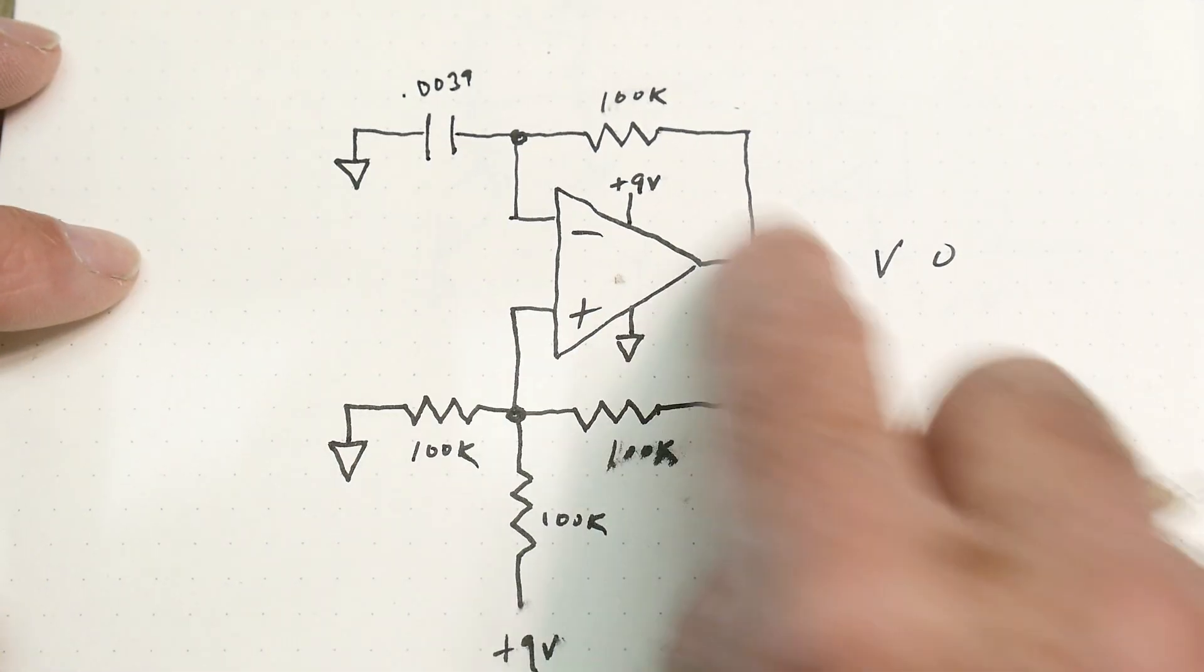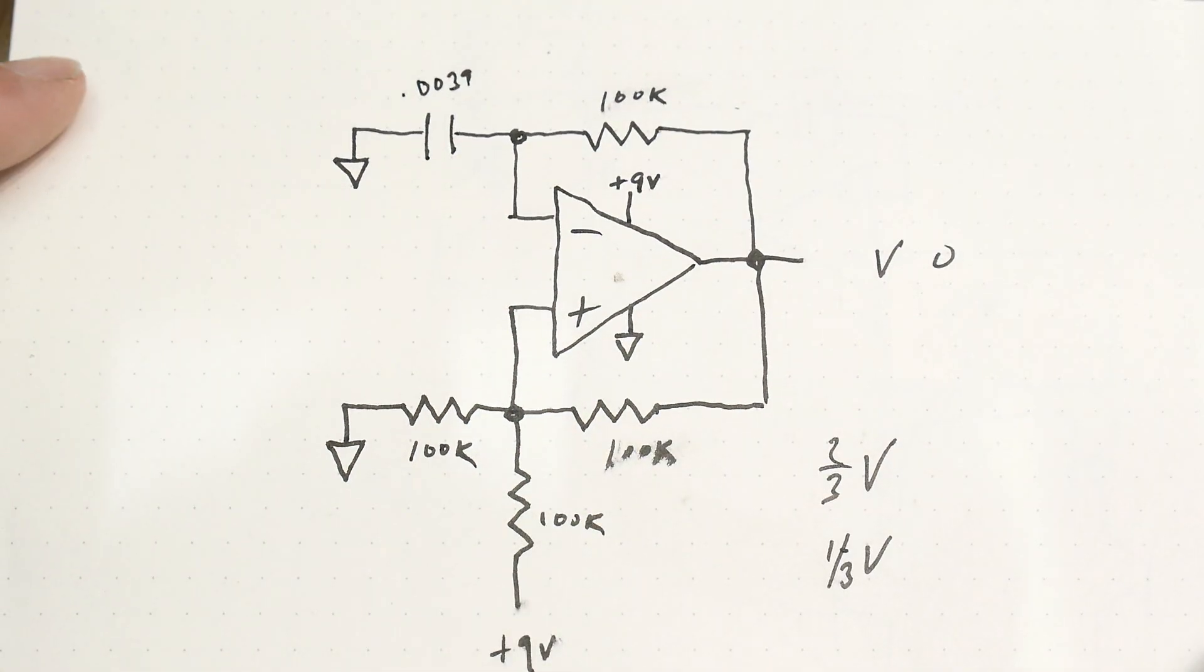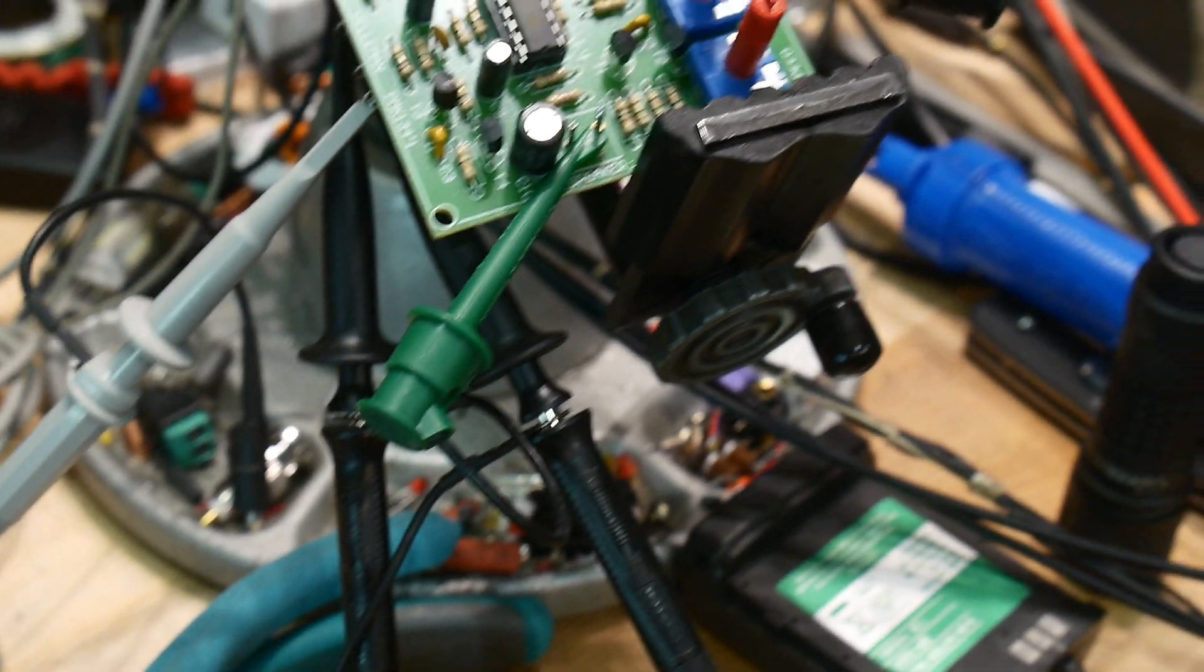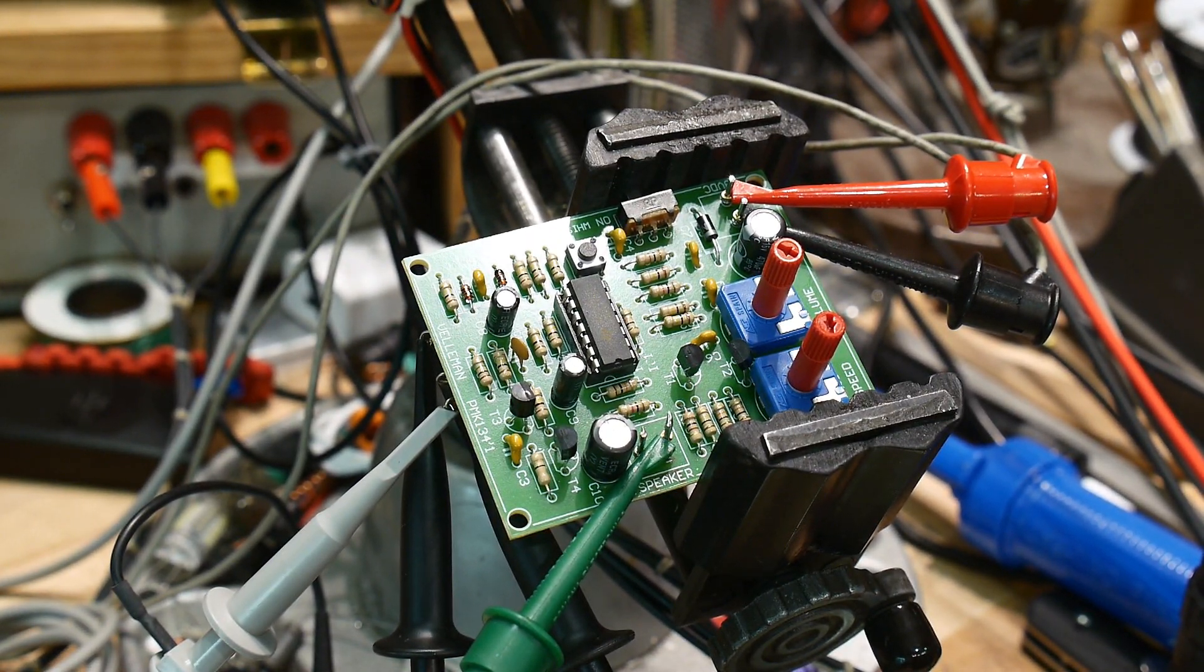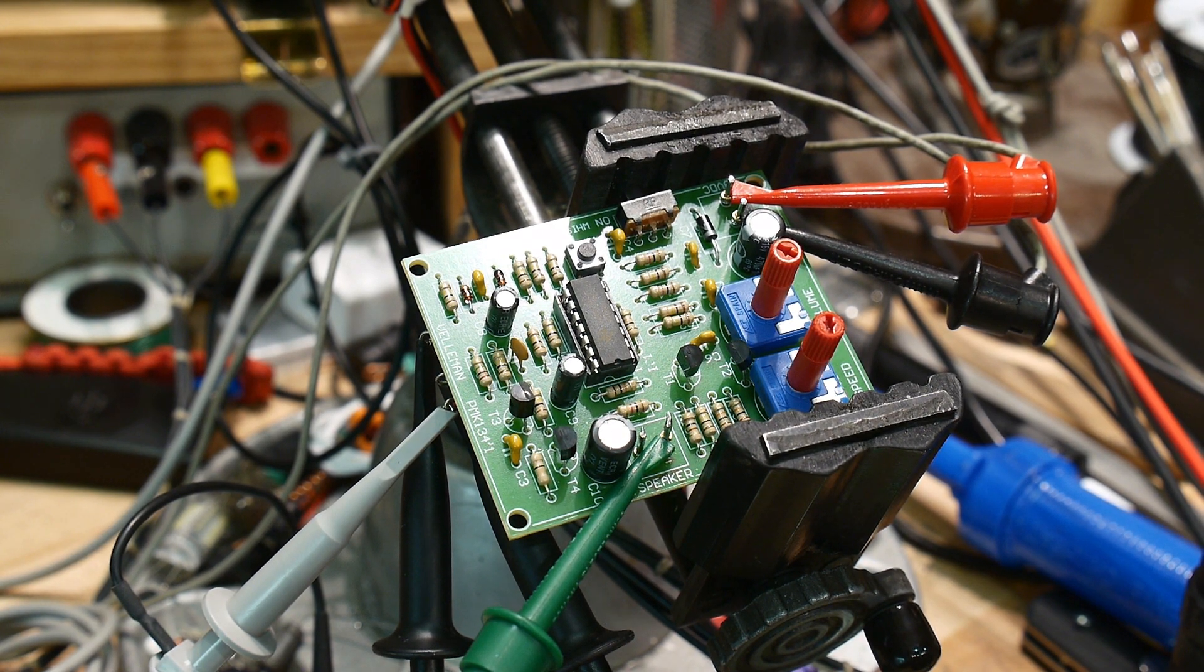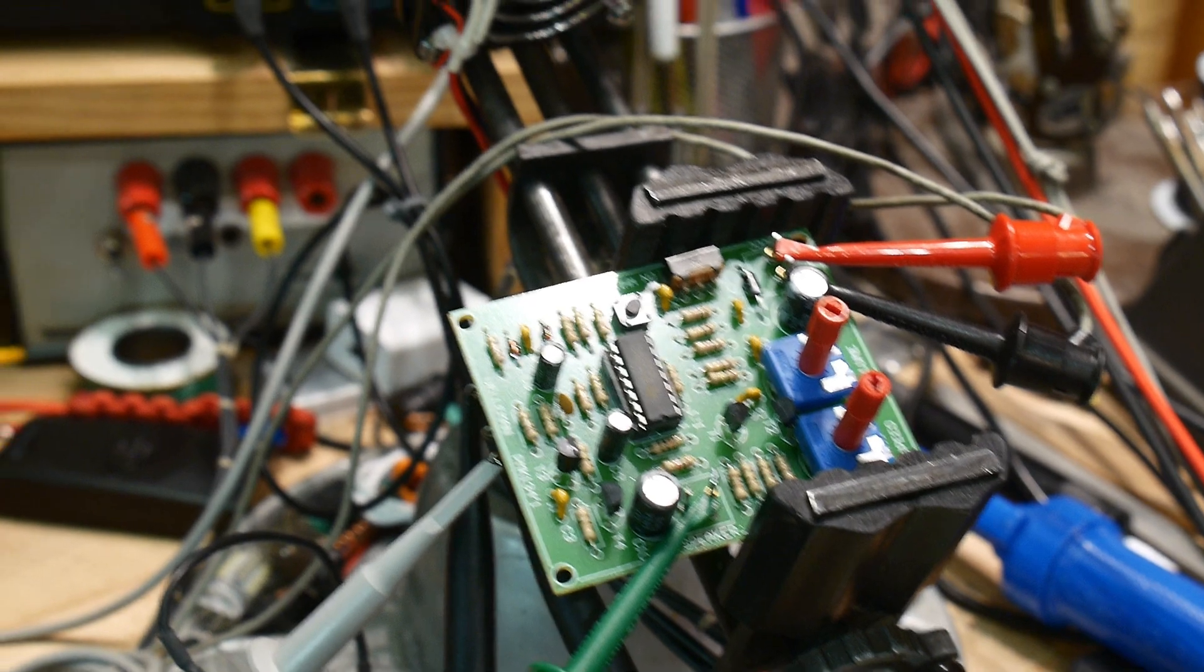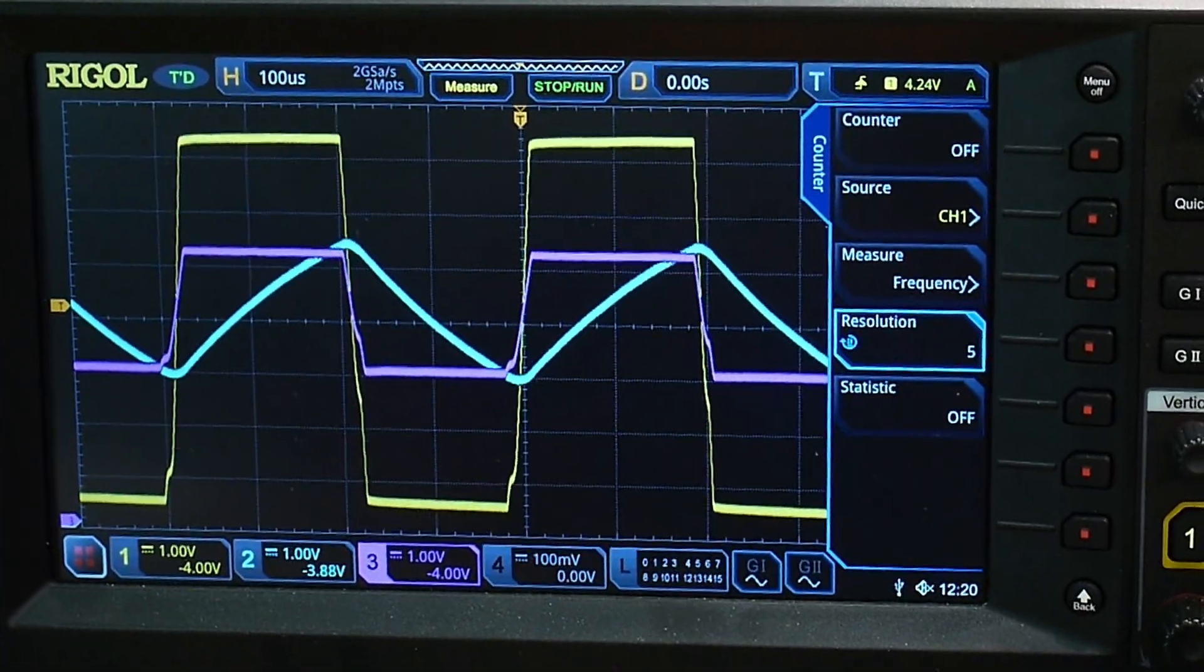And then just to set the speed of this thing, you just take this R and the C, and that tells you what the speed this thing's going to oscillate. Let's do that with my choo-choo train circuit because it had op amp oscillators. So I've put scope probes on one of those oscillators and this is what we've got.